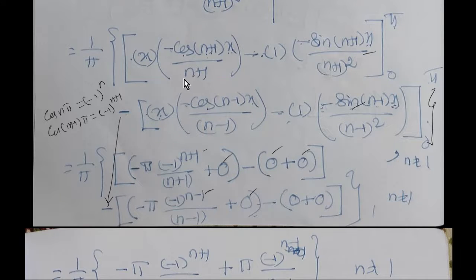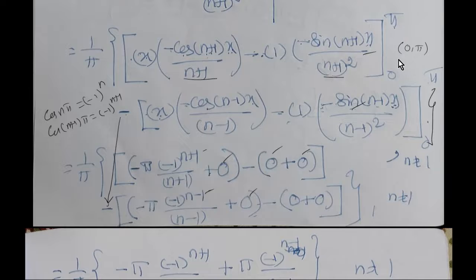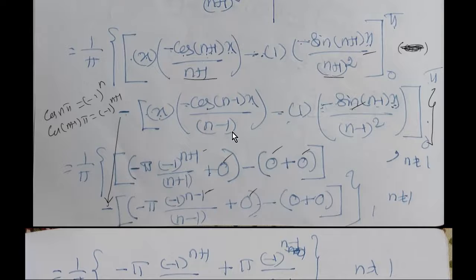Simplifying, aₙ involves denominators (n+1) and (n−1). When n = 1, the denominator (n−1) = 0, which makes the expression indeterminate or infinite. Therefore, we must treat the case n = 1 separately. For n ≠ 1, we proceed with the general formula.